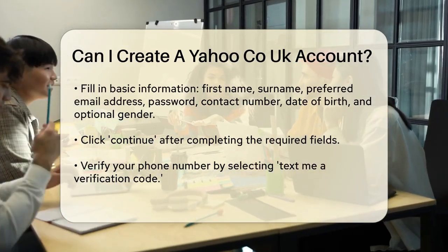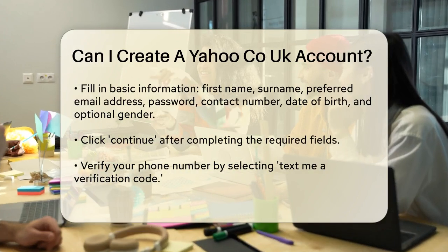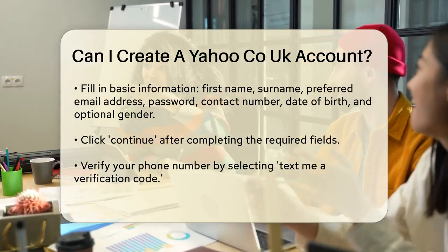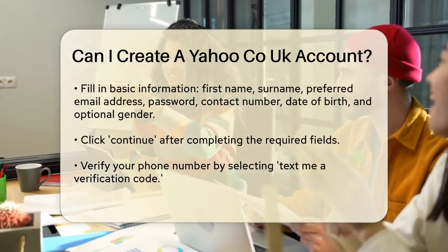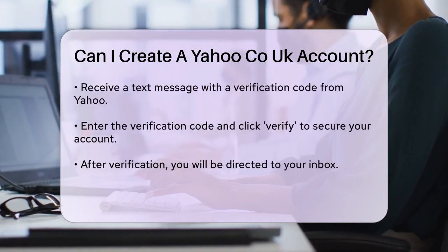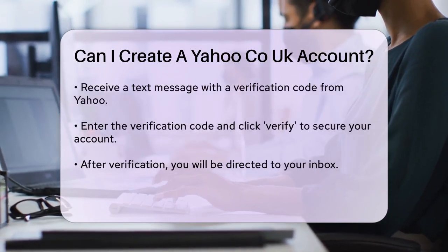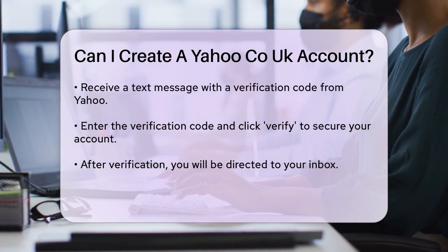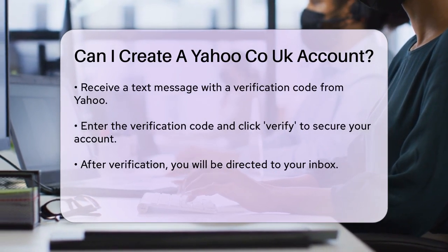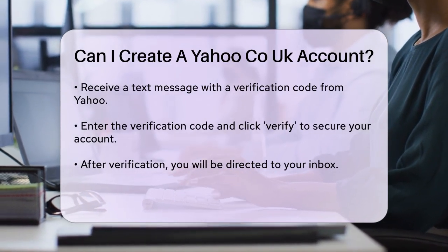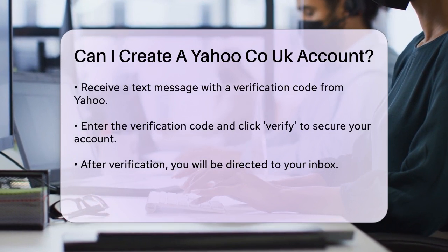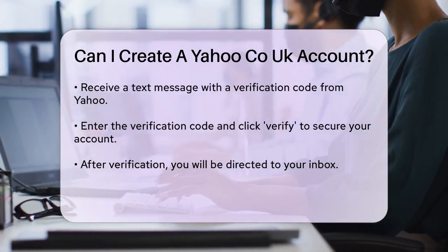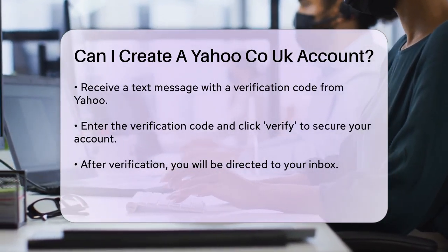After filling in all the required details, click on Continue. Yahoo will then ask you to verify your phone number. Select the option to text me a verification code, and Yahoo will send a text message to your phone with a verification code. Enter the verification code sent to your phone and select Verify. This step is important to ensure the security of your account.